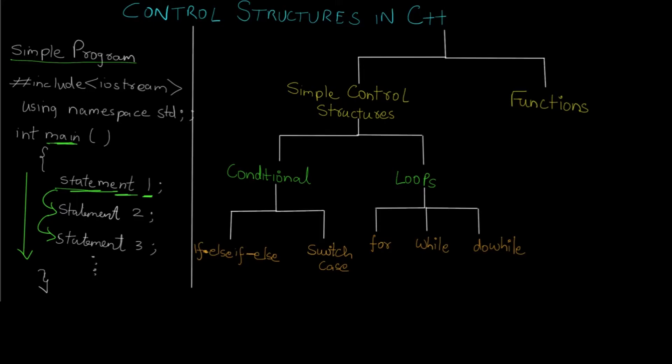Another example would be: what if you want statement two to be executed 10 times? You would have to write it down 10 times manually. Instead of this you can use control structures. These are the two basic benefits of control structures.